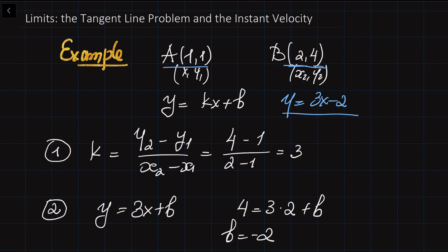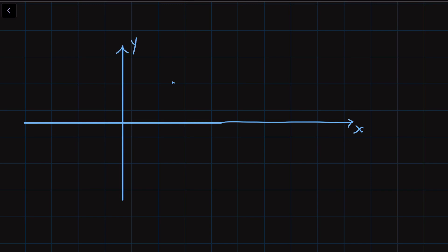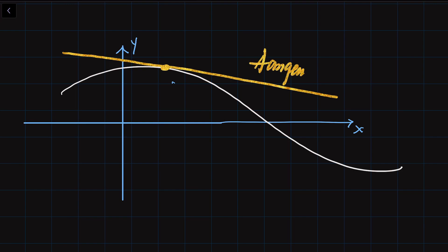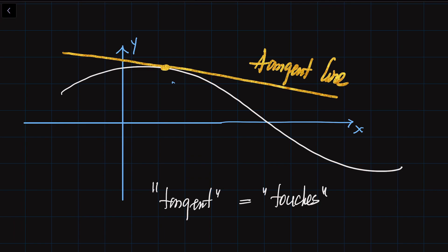Now let's discuss the problem of the tangent line. If you are given a curve, let me draw coordinate axes with X and Y. If you are given some curve, the tangent line is the line which just touches this curve at one point. I really like the word tangent because from the Greek, tangent means 'touches.' So the tangent line touches the curve at a single point.